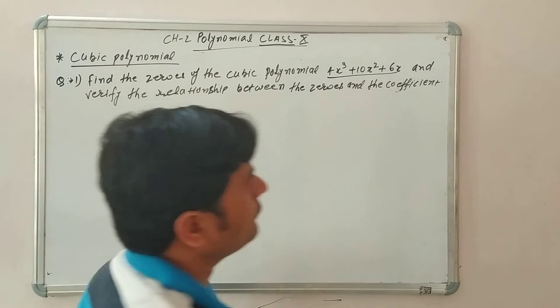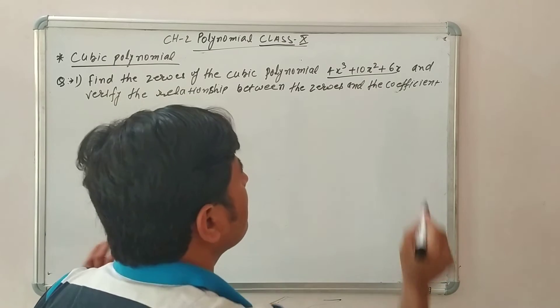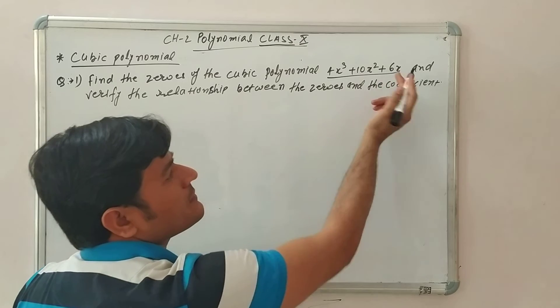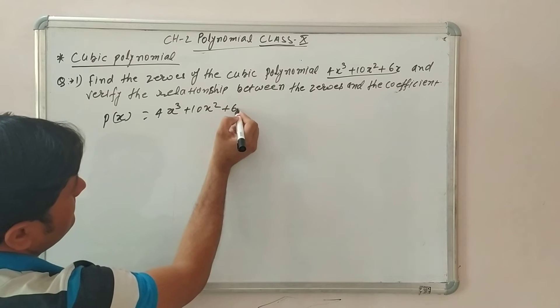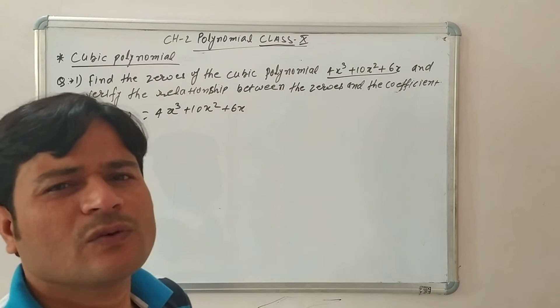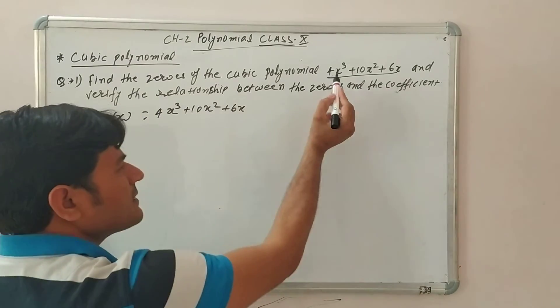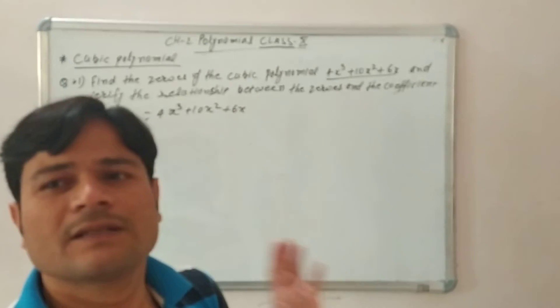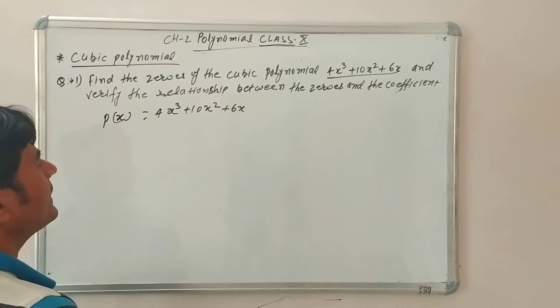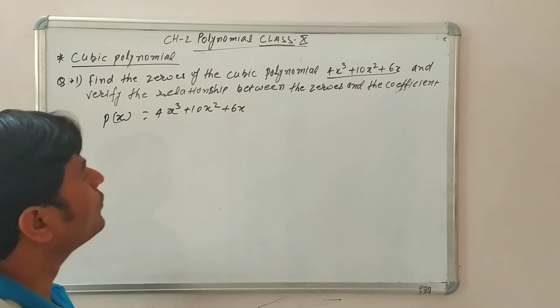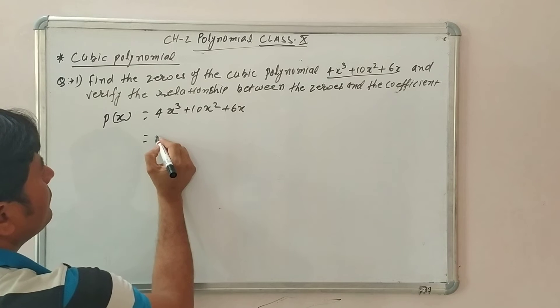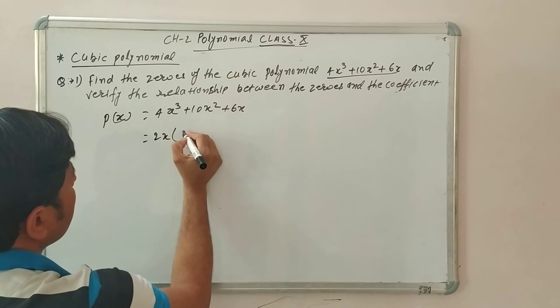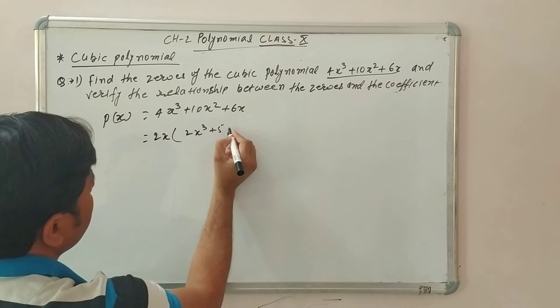Now let's find the zeros of the cubic polynomial 4x³ + 10x² + 6x. There is no constant term, so we take it as zero. The degree is 3, confirming it is a cubic polynomial. We will find the roots by the factorization method. Taking 2x common from all terms gives us 2x(2x² + 5x + 3).